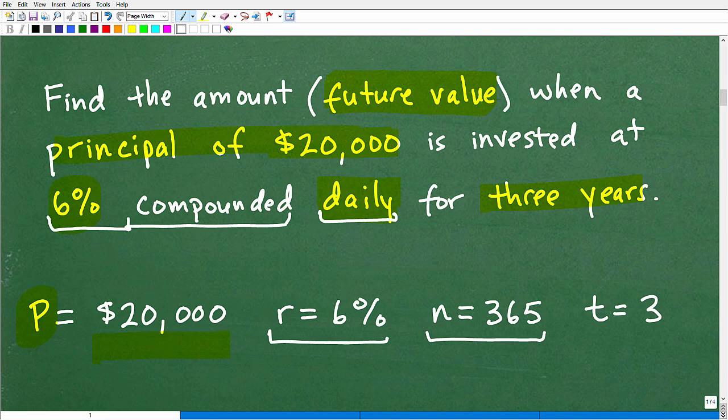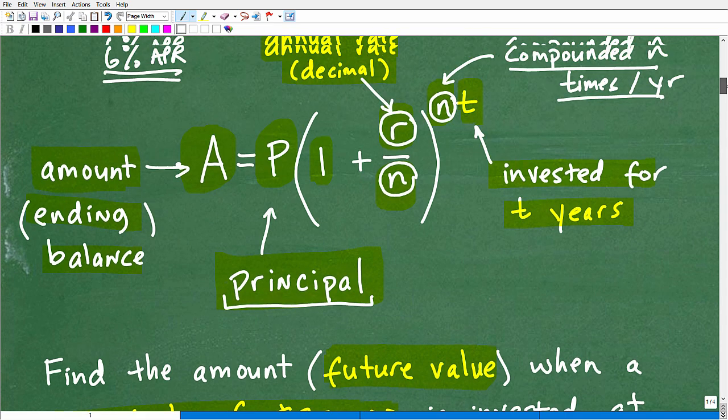So we'll use 365 as how many days will be in a year. This 6% is being compounded over 365 times in a year. So this is our N value. And then it's going to be running in the course of three years. That is our T value. We got P, R, N, and T.